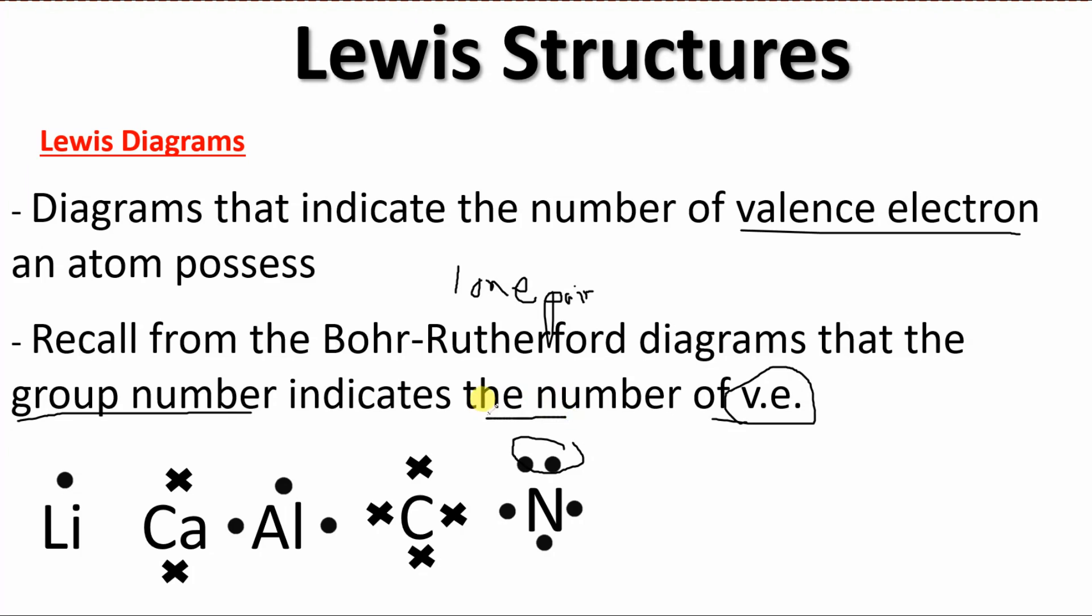You'll notice that all the ones we did previous to this there were no lone pairs, which means those ones aren't really happy with themselves. And as well too, this one has three spots where lone pairs don't exist, so those spots are not exactly happy either.